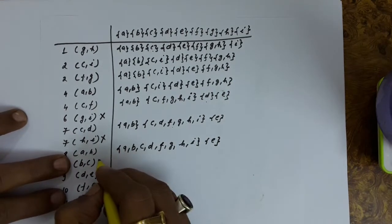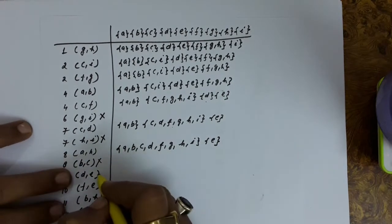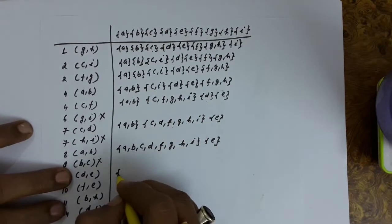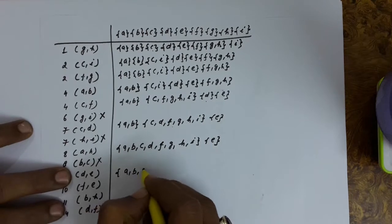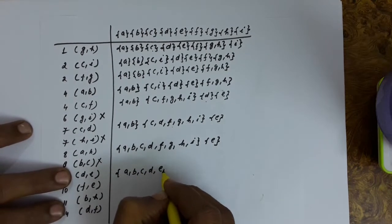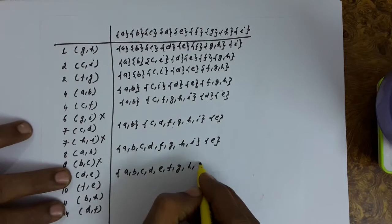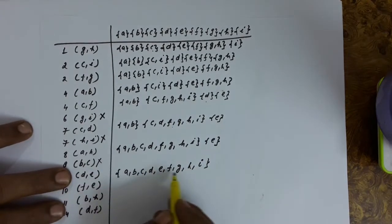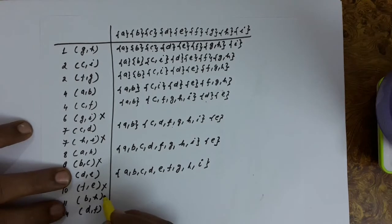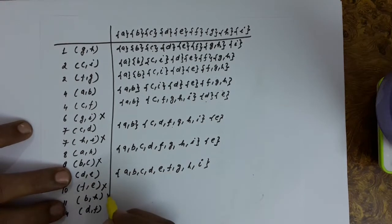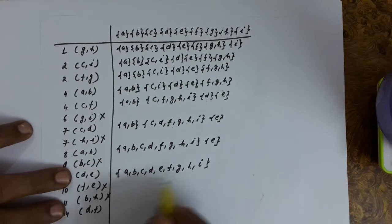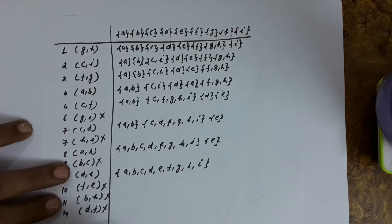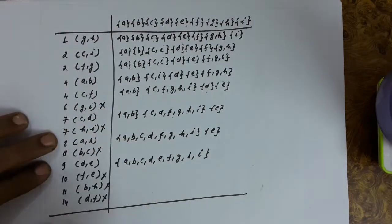For edge BC, B and C are in the same set — cross. For edge DE, D is in one set and E is in another, so we unite them. For edge FE — same set, cross. For edge BH — same set, cross. For edge DF — same set, cross. For edge DF again — same set, cross.